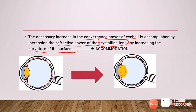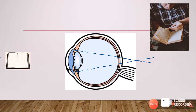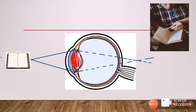The lens is trying to accommodate for our need to look at a near object. Once there is accommodation, the lens will become fatter and increase its converging ability. The rays of light coming from near, which were diverging and initially getting focused behind the retina, now because of the increased convexity of the anterior surface of the lens, will have increased power and will be able to focus onto the retina.